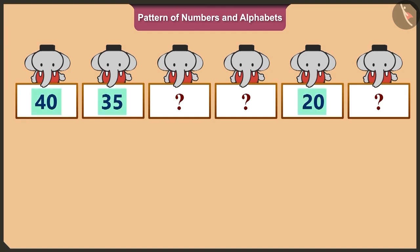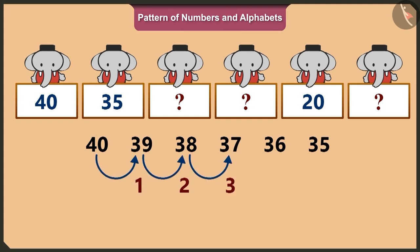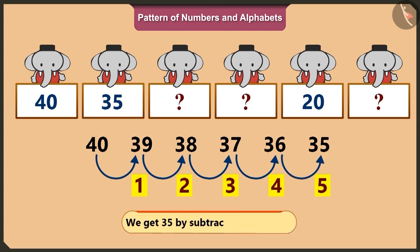in this pattern, the numbers are in descending order. Hence, we have forty, thirty-nine, thirty-eight, thirty-seven, thirty-six, thirty-five. Which is one, two, three, four, five. On subtracting five from forty, we get thirty-five.